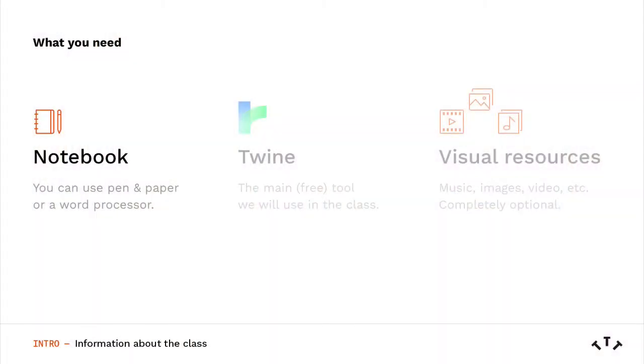Your final project will consist of creating your own interactive story and having it ready for your future readers. You don't need previous experience writing stories or using Twine to take this class. You will need a notebook or a word processor such as Word to develop the idea of your story, Twine, and some visual resources such as pictures, music and video in case you use them.